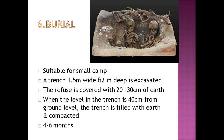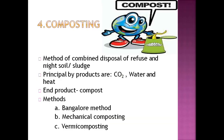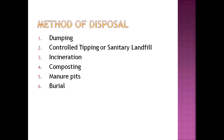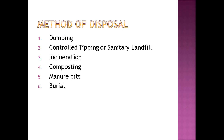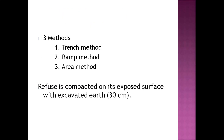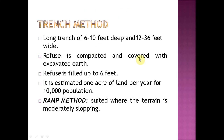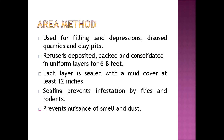To recap, the six methods of solid waste management are: dumping, controlled tipping or sanitary landfill, incineration, composting, manure pits, and burial. In dumping, waste is placed in the open, causing nuisance from rodents, flies, contamination of water bodies, and smell. Controlled tipping has three sub-methods — trench, ramp, and area. The trench is 6 to 10 feet deep and 12 to 36 feet wide. Ramp method is used where the terrain is sloping.